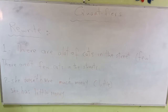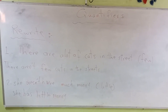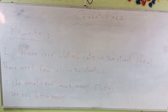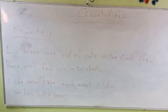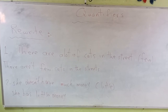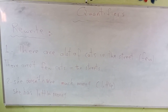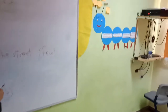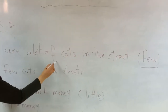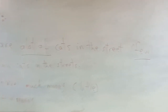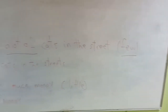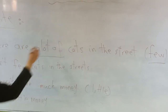Now grade three, let's answer some questions from your booklet. There are a lot of cats in the street — use few. Most of you might say there are few cats in the street, but that's wrong. You need to focus on the quantifier in the sentence and the quantifier between the brackets. The quantifier in the sentence is a lot of; I want to replace it with few. So underline both quantifiers, remove a lot of, and put few.